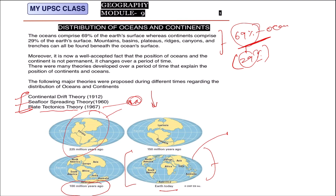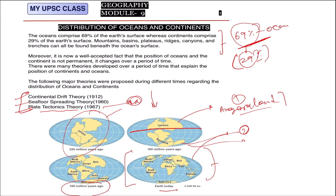First of all, the Pangea land divided into two parts. One is known as Laurasia — also called Angara land — and the other is known as Gondwana land. So basically Pangea divided into these two parts: Angara land and Gondwana land. The middle sea between them is known as the Tethys Sea.